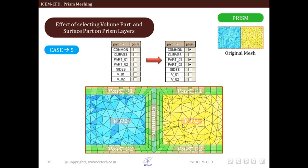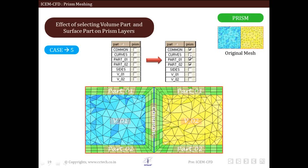In the next case, we select all surface parts — Common, Part 01, and Part 02 — for prism creation and do not select any volume. Prism layers are created on all selected surfaces and grow on all volumes. We can see prism layers around Common, Part 01, and Part 02, and since no volume was selected, all volumes are selected by default and prism layers pass through all volumes.